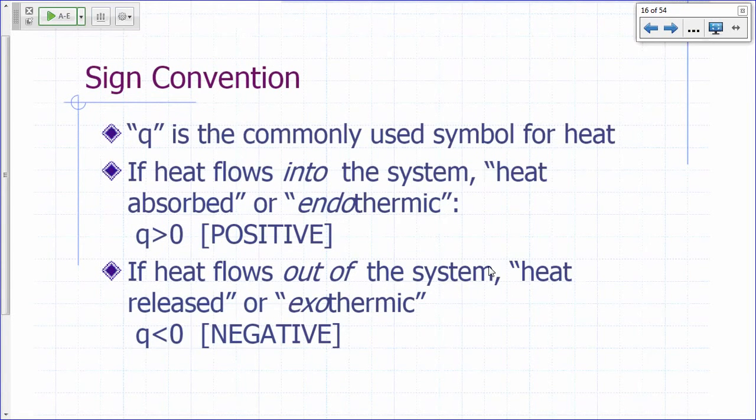We assign conventions when dealing with heat and work. In the case of heat, the letter Q is the commonly used symbol for heat transfer. If heat goes into a system, the energy of the system increases, so we assign a positive value for heat. When a system absorbs heat, we're looking at a process that is endothermic.